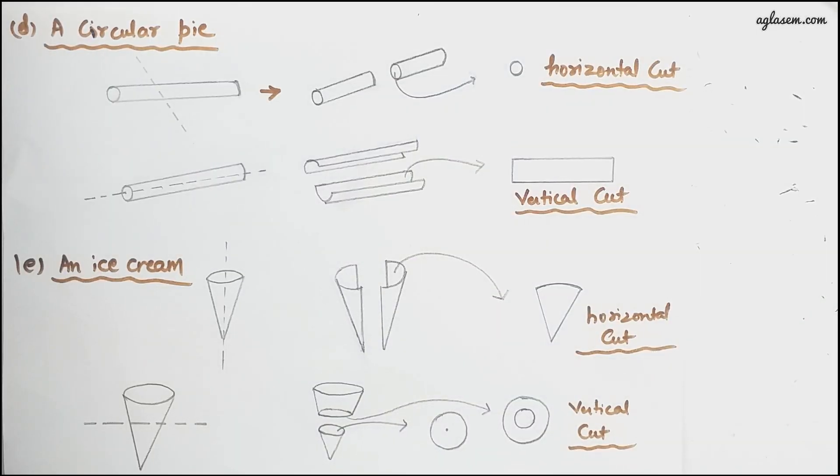The circular pipe will obviously be of reduced length if it is a horizontal cut. And if it is a vertical cut, you will get two halves of a pipe.